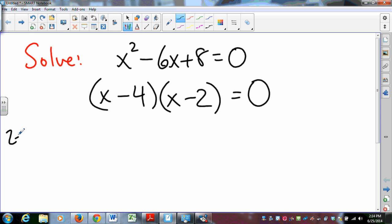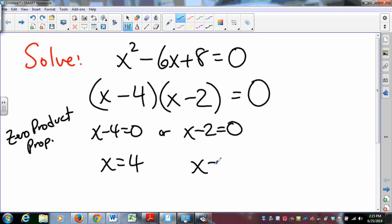Then we use something called the zero product property, and the zero product property says if I have a product and that product equals 0, then either this equals 0 or that equals 0. That's the only way to get a product of 0, is if one of the factors is 0. In the case on the left, x happens to be 4, and in the case on the right, x happens to be 2. Those are the two values of x that solve the quadratic. You need both of them, x = 4, x = 2.